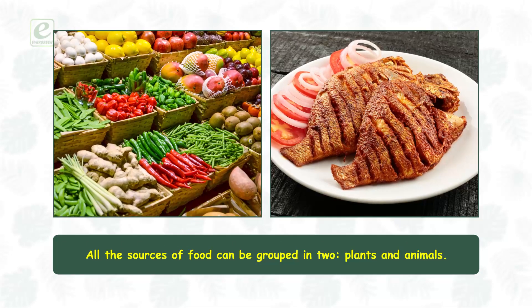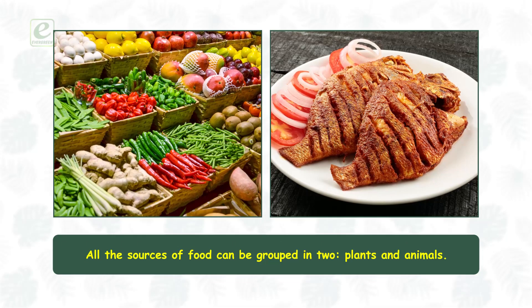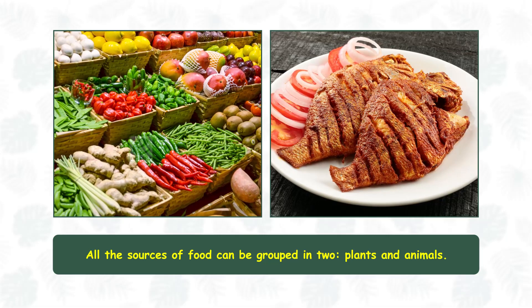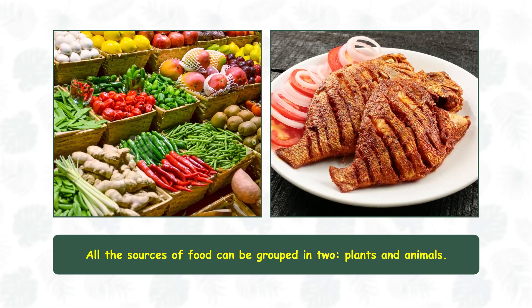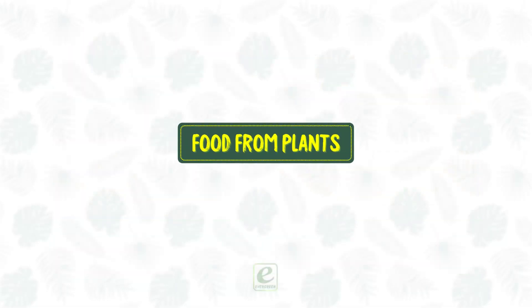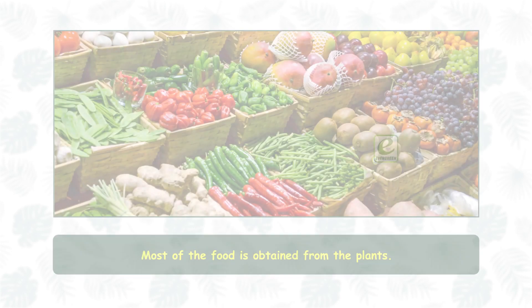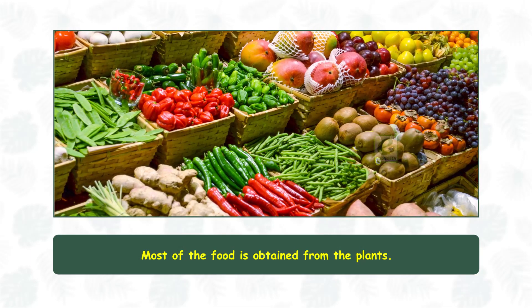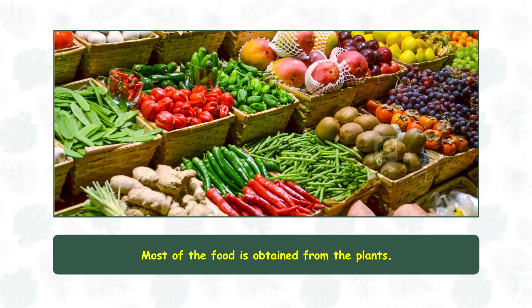All the sources of food can be grouped into two: plants and animals. Food from plants. Most of the food is obtained from plants.